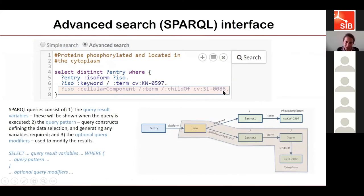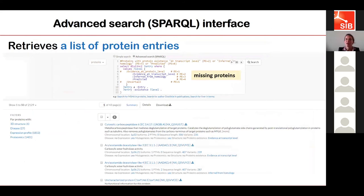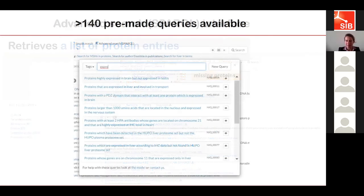I understand that when you don't know SPARQL, it can be difficult to write these queries. So we have made different pre-built queries available on the neXtProt website to help users write their own queries. In the advanced search of neXtProt, you have an interface to retrieve lists of protein entries with SPARQL queries — for example, looking for proteins missing evidence of detection at protein level — and you can immediately get the complete list in one query.